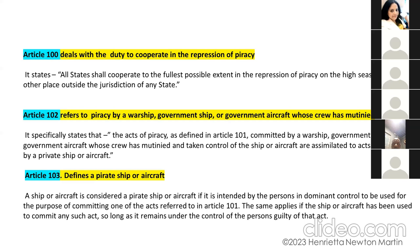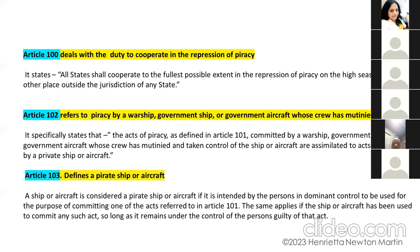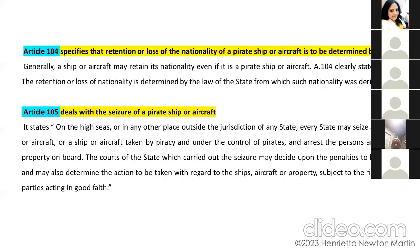Article 103 defines a pirate ship or aircraft. A ship or aircraft is considered a pirate ship or aircraft if it is intended by the persons in dominant control to be used for the purpose of committing one of the acts referred to in Article 101. The same applies to a ship or aircraft that has been used to commit any such act, so long as it remains under the control of the persons guilty of the act.